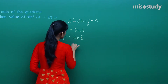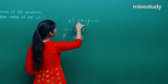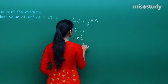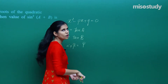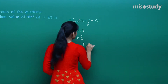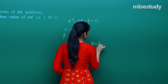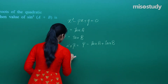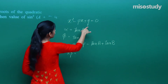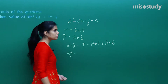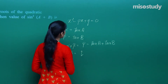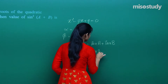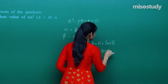The sum of roots is minus the coefficient of x upon the coefficient of x², which gives p upon 1, which is p. So tan(a) + tan(b) = p. The product of the roots is the constant term upon the coefficient of x², which is q upon 1, which is q. So tan(a) × tan(b) = q.